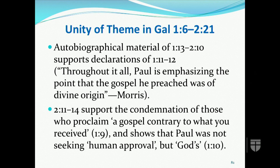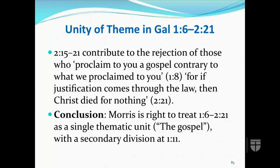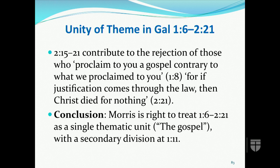As for the unity of the theme in 1:6 through 2:21, the autobiographical material of 1:13 to 2:10 supports the declarations of 1:11-12. In turn, the account of the confrontation with Peter in 2:11-14 supports the condemnation of those who proclaim a gospel contrary to what the Galatians have received in 1:9, as well as showing that Paul was not seeking human approval but God's approval in 1:10. We cannot know for certainty how much of 2:15-21 is a continuation of Paul's speech to Peter, but what is certain is that these verses contribute to the rejection of those who proclaim the gospel contrary to what Paul proclaimed. So it is right to treat 1:6 to 2:21 as a single thematic unit with a secondary division at 1:11.